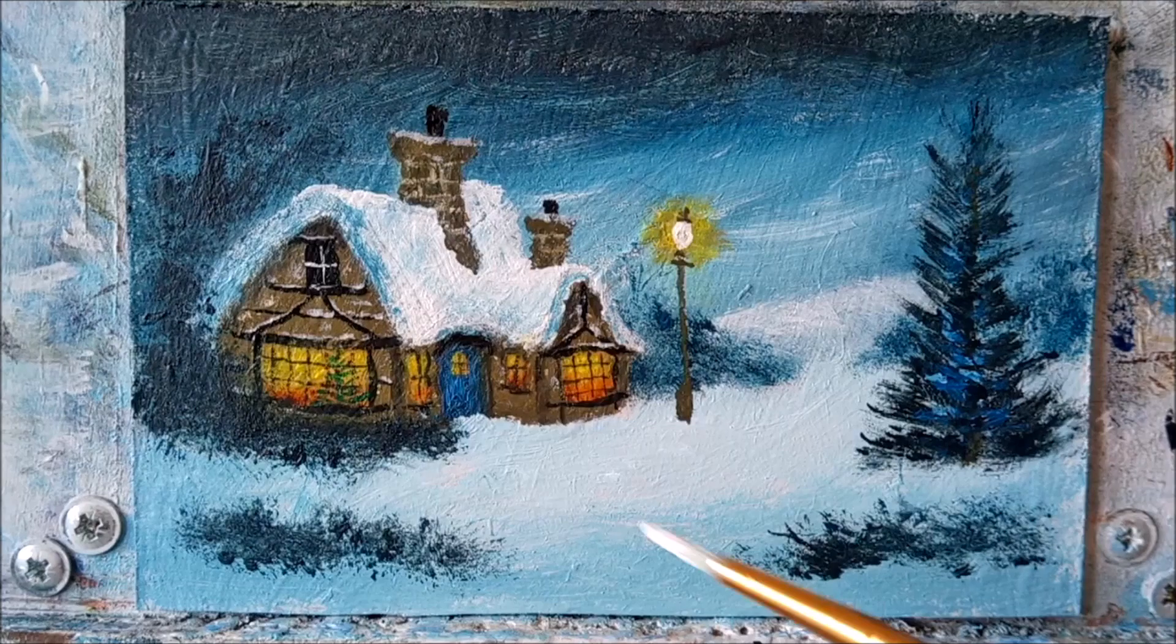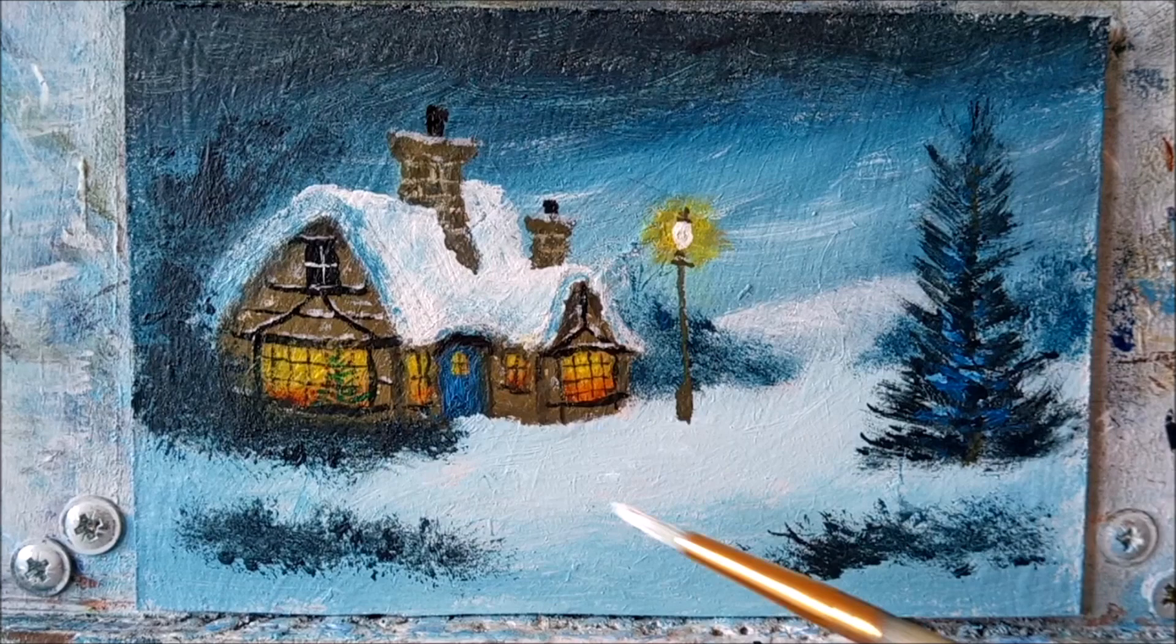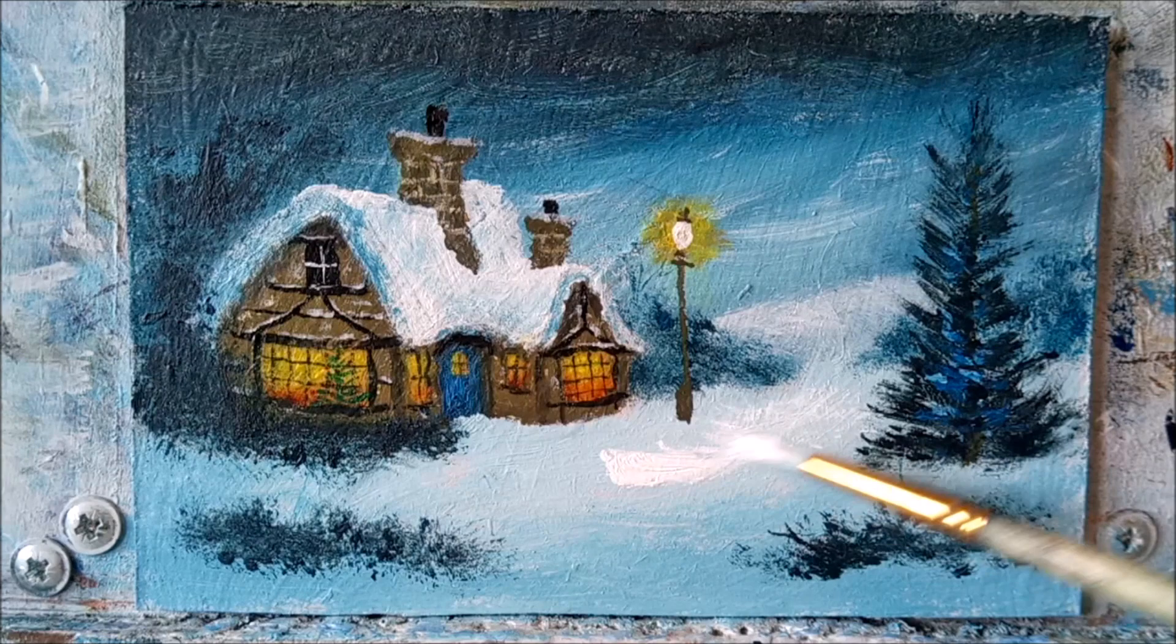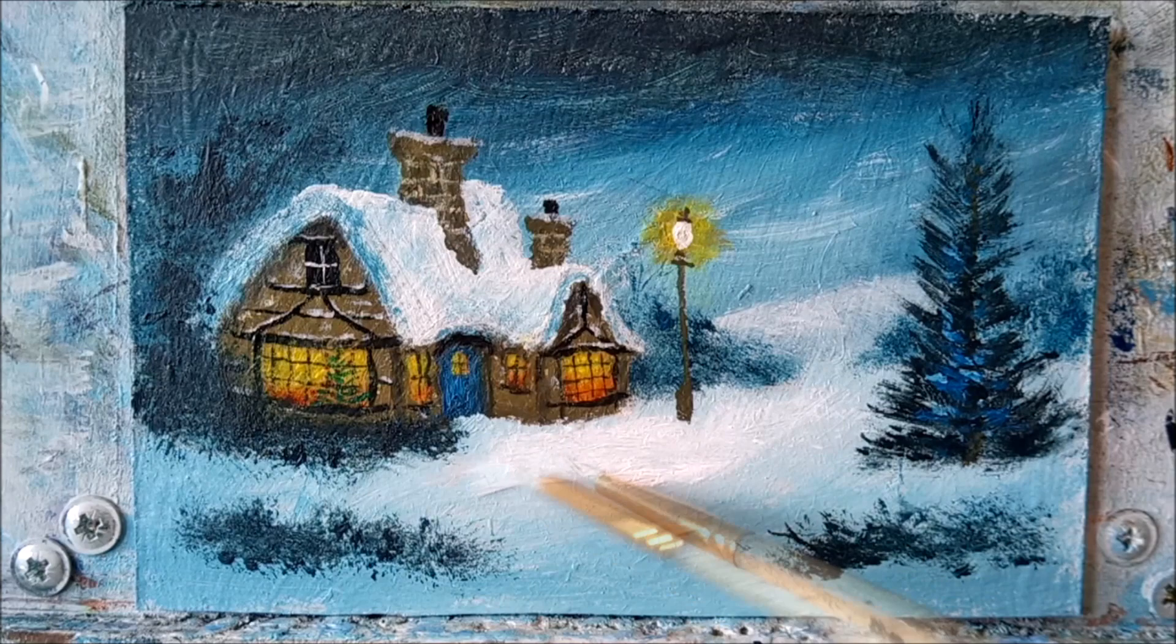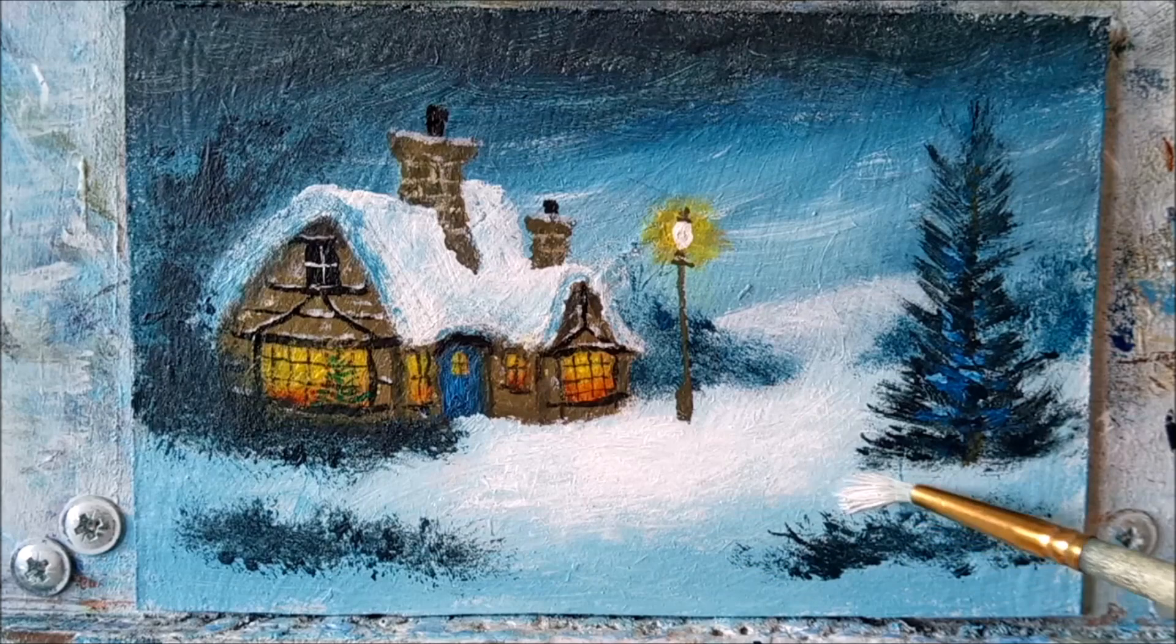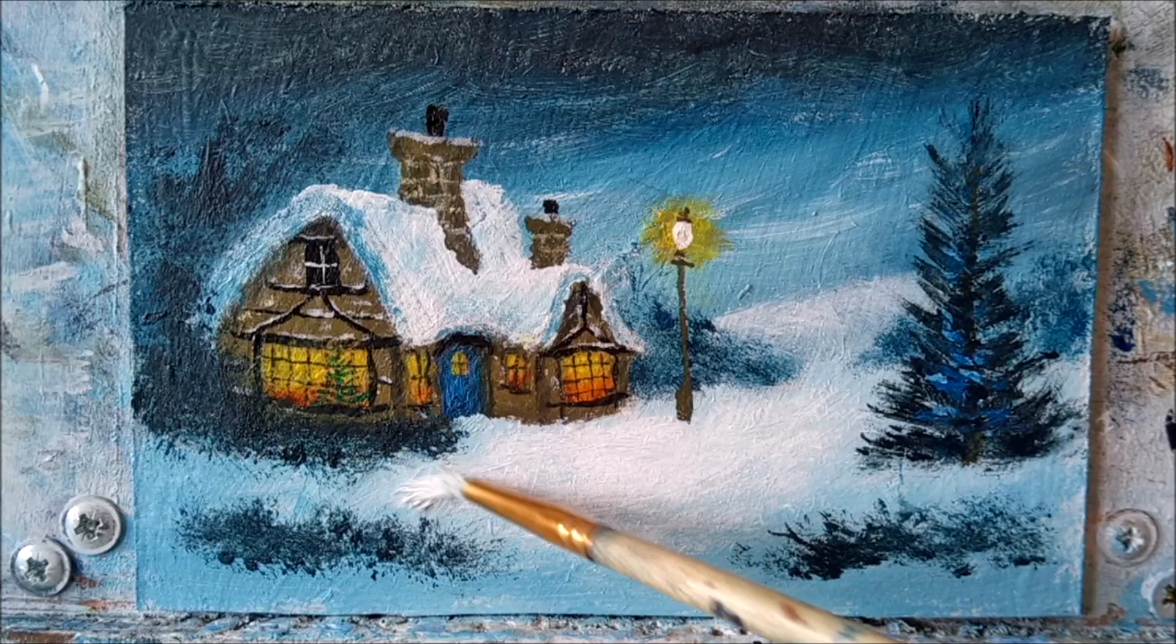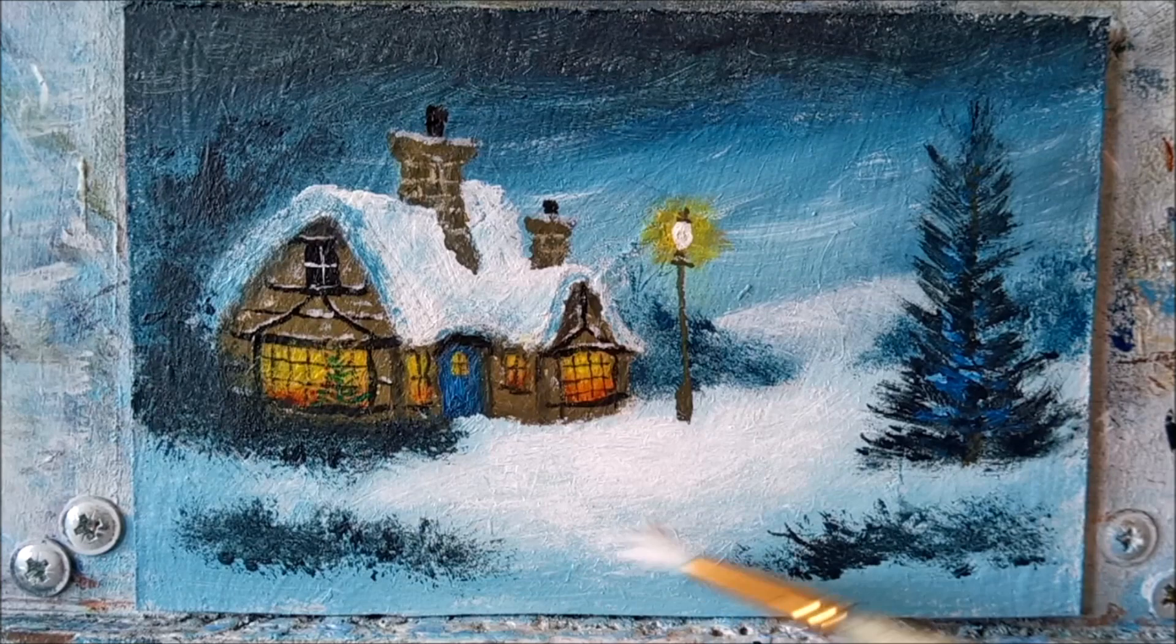All right, make sure your bristle brush is clean and dry and let's highlight the foreground snow. And I'm just going to begin in the middle here, thinning the paint outwards gradually so that it fades into the snow shadow around the edges of the painting. You want to have the strongest area of white around the main focal point, which is the cottage door and the lamppost. Just going to add some white underneath the two foreground bushes here, but not too much though, just gently dragging my brush across.